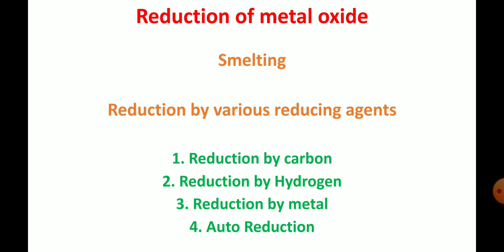Dear students, can you remember the steps employed in metallurgical processes? How many steps are there? There are 3 steps involved in metallurgical processes. Step 1 is concentration of the ore. The removal of impurities from the ore is called concentration.